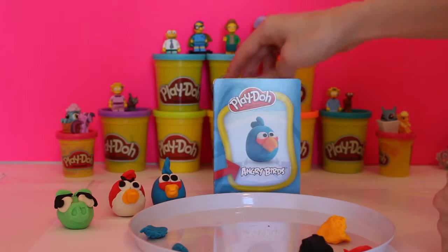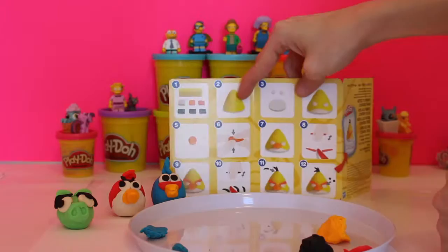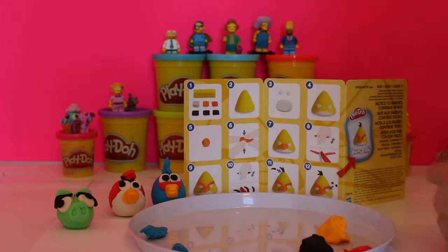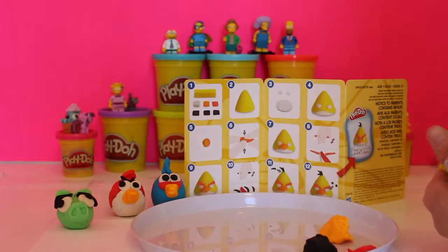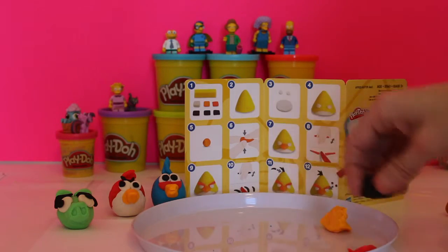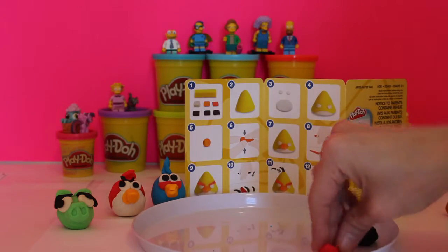So now we're going to flip the page over and do the yellow guy. The yellow guy is a little bit harder because you don't make a circle with him. You make a triangle.